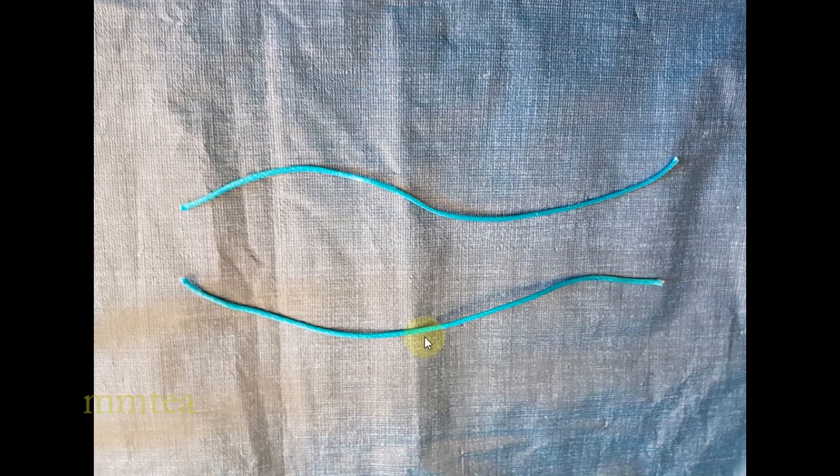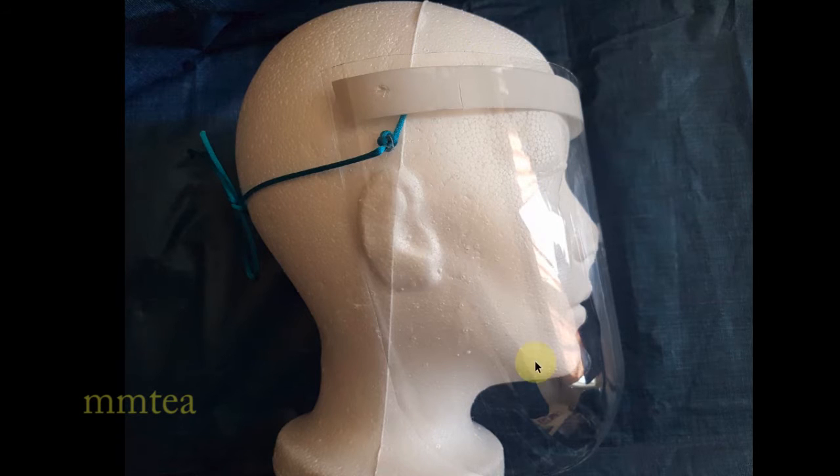You need a strong string. I got two here. Just below the foam tape here, make a little hole, then insert the string in and do a double knot. Do the same thing on the other side. I place the face shield on the mannequin here, and I tie a knot in the back.